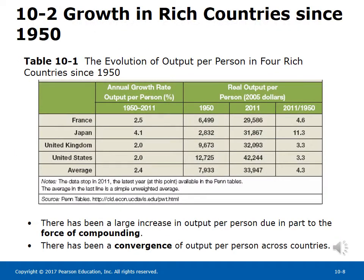Section 10-2: Growth in rich countries since 1950. Table 10-1 shows the evolution of output per person in four rich countries since 1950. It shows a large increase in output per person — GDP divided by population, measured at PPP prices — in all four countries. In Japan, it increased 11.3 times; in France, 4.6 times.